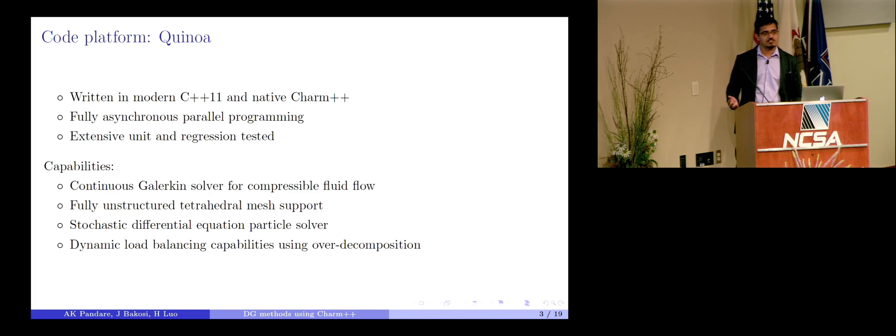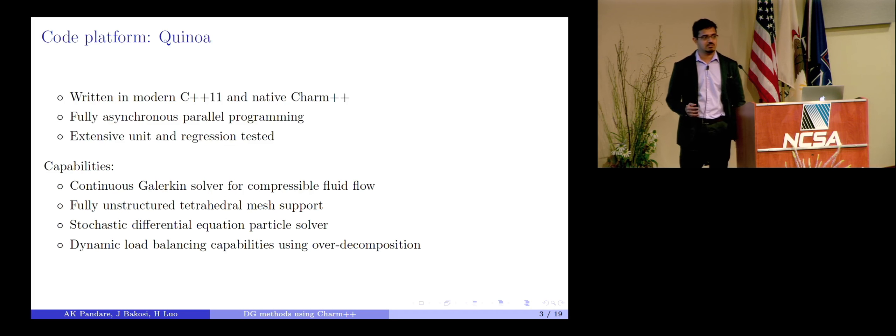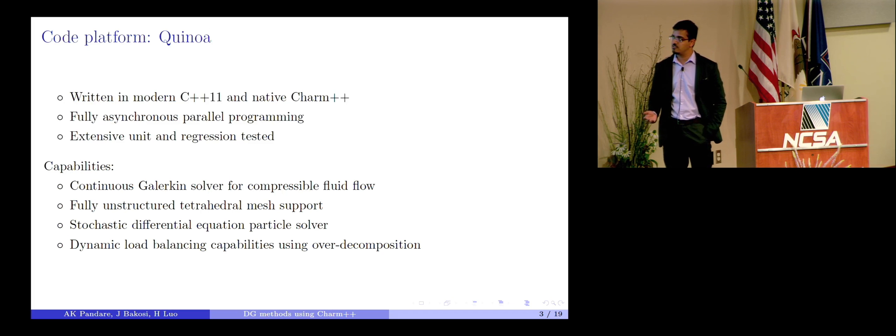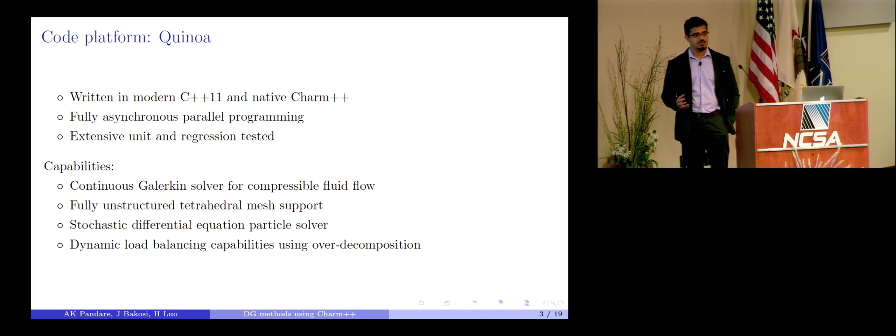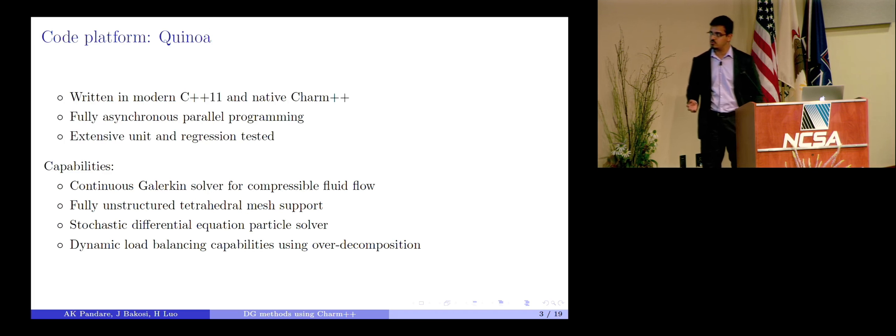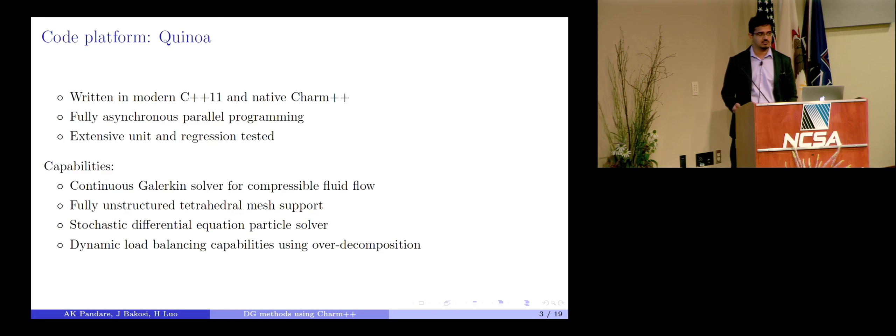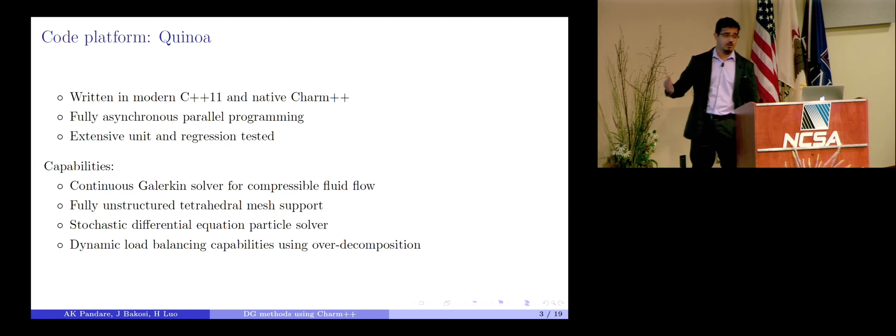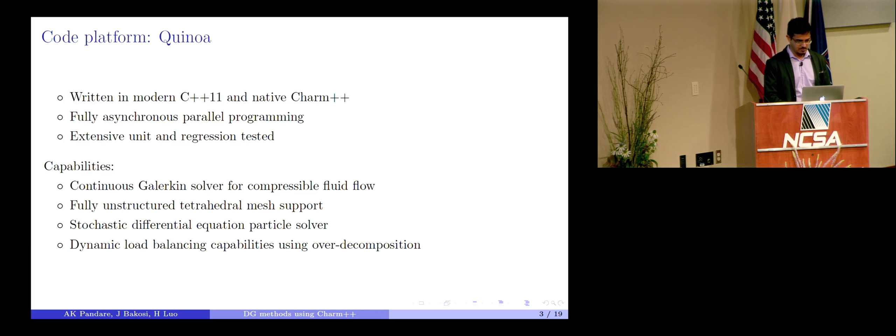The current capabilities of this code before we started off with the DG method was it was able to handle continuous Galerkin solvers for compressible fluid flow. The kind of meshes which were being used were tetrahedral meshes, fully unstructured tets. And it also has a capability to solve stochastic differential equations for particles. The key feature of this code which we are trying to exploit, and of charm++ of course, is the dynamic load balancing capabilities using the over decomposition strategy. We'll talk about this more as we proceed.